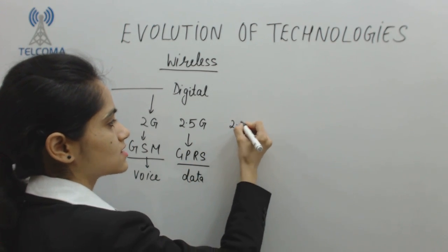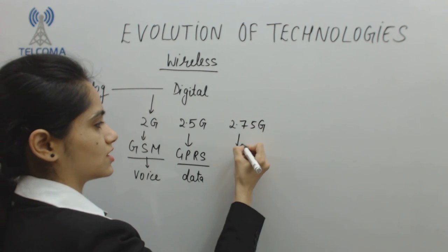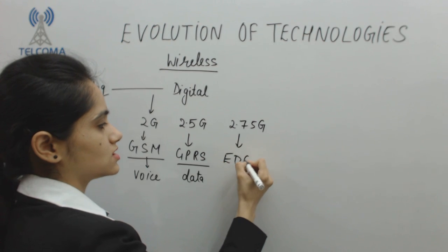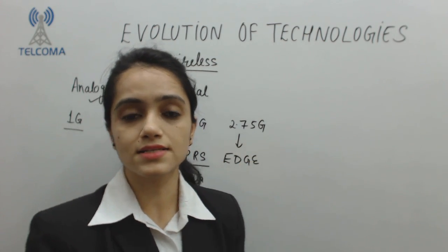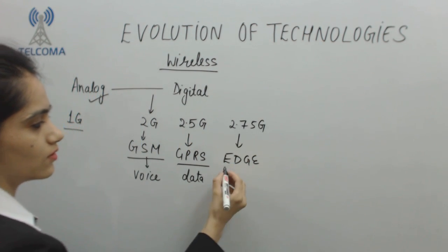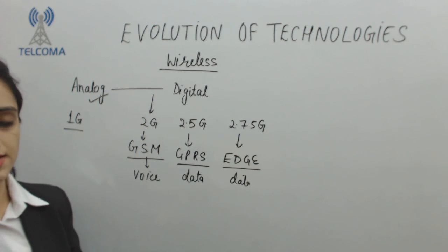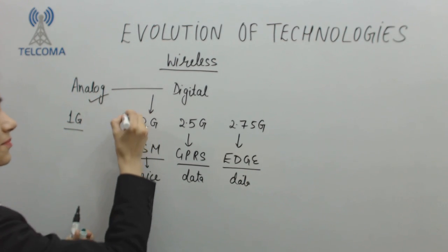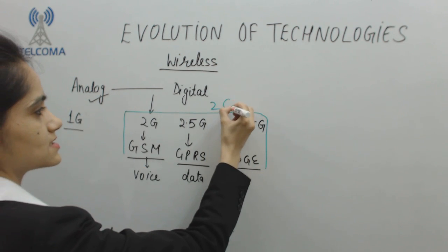So we require to move to the next which is our 2.75G which is EDGE technology, Enhanced Data for GSM Evolution, because we require increased data rates in the system. So we have EDGE technology which is also data. Combined, we name it as GSM, GPRS and EDGE for voice and data. This is my second generation of the wireless technologies.